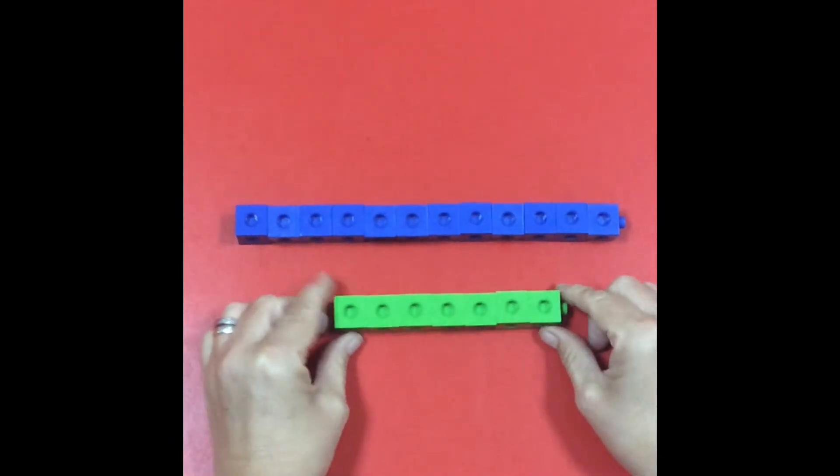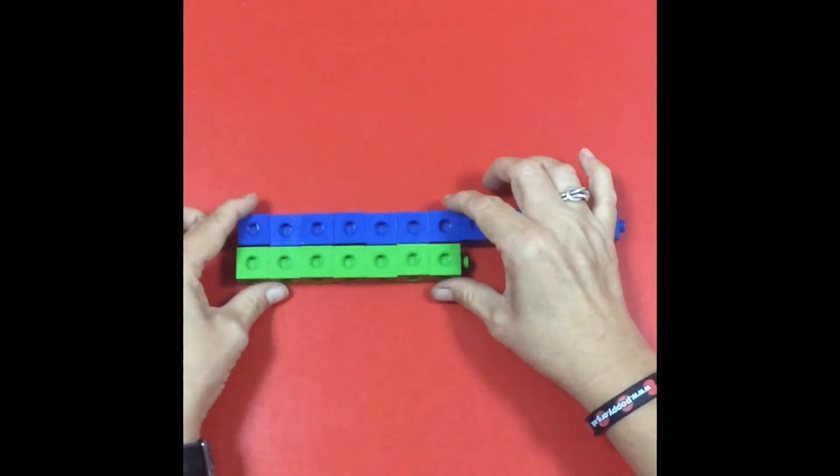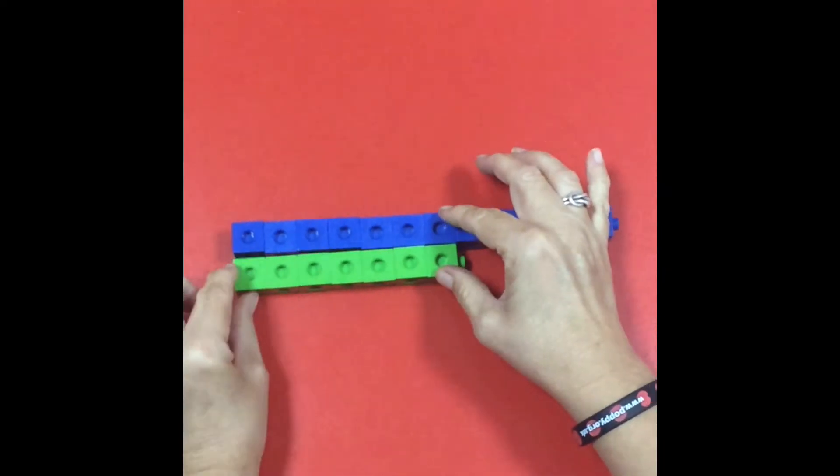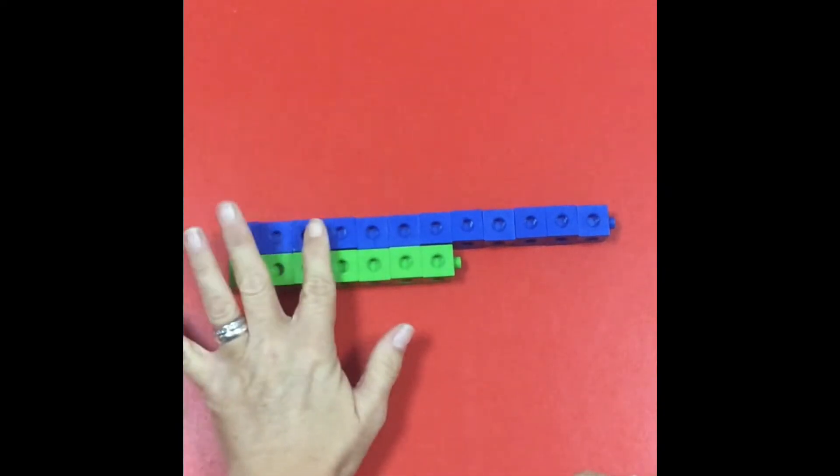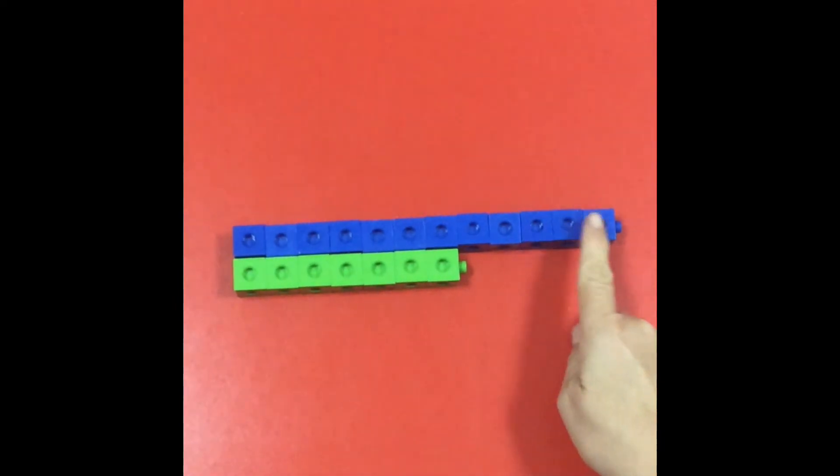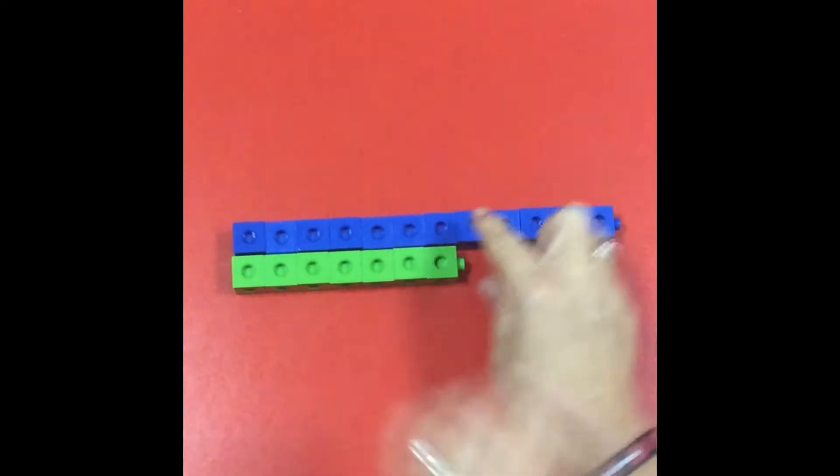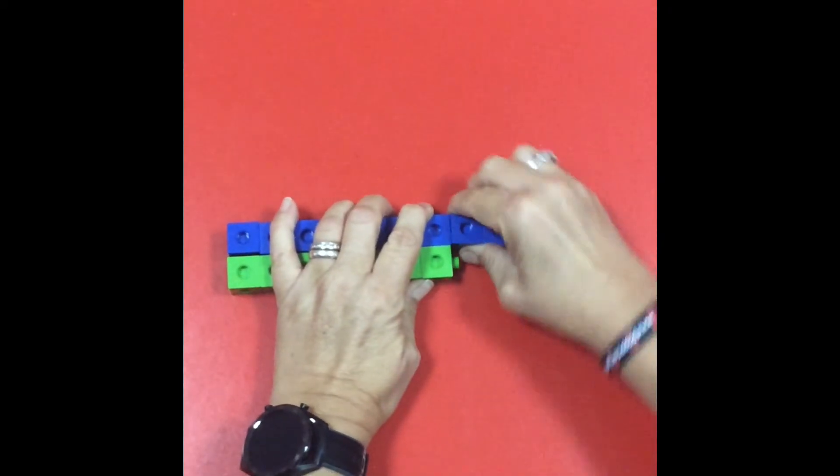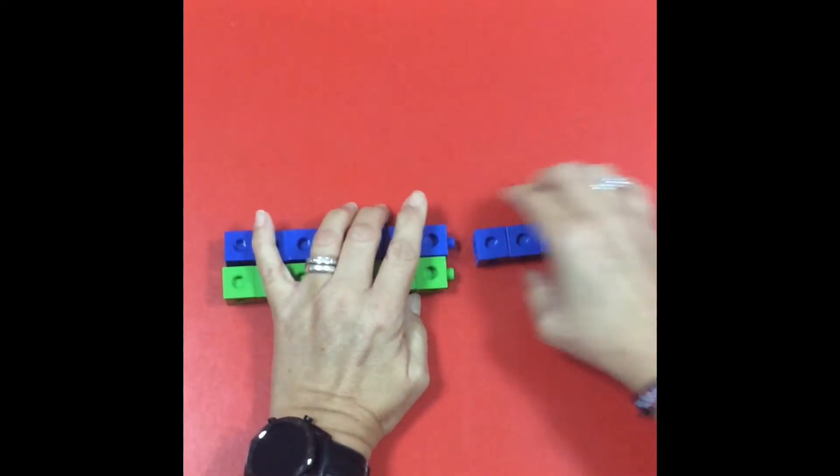The idea of cubes is that they can be matched up so that they are equal. They can see that these ones have got a partner but these ones are left on their own. This is the difference because these are the same, so they can break it off so that they are the same.